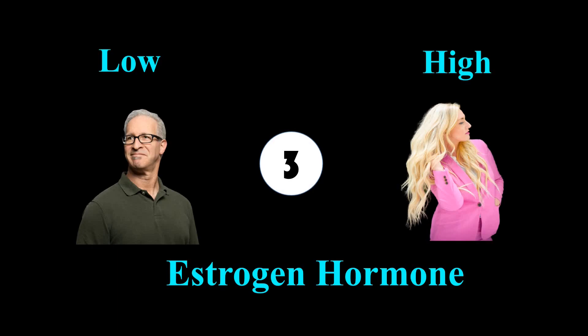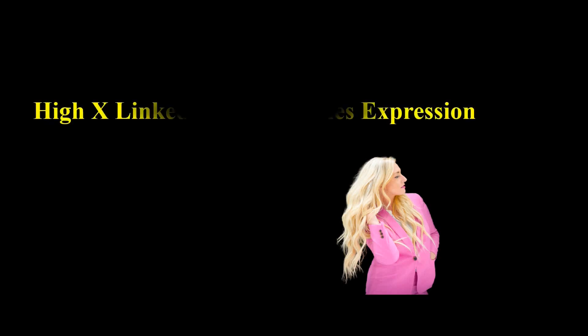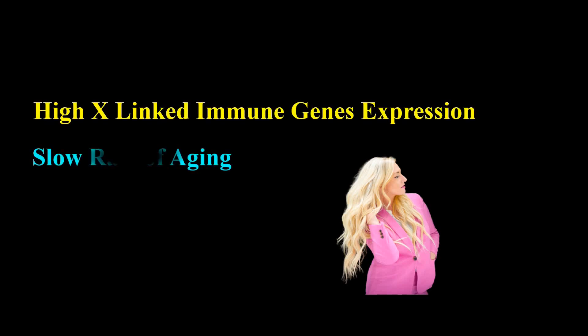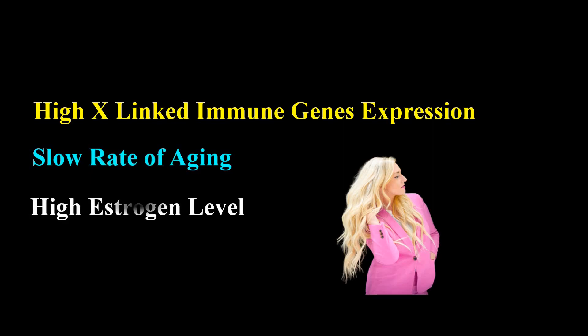Another biological factor that enables females to have a stronger immune system is the high level of estrogen hormone. Estrogen is a female hormone, very high in females compared to males, and is critical for immune-related gene expression and functioning. So all these factors — higher gene expression of immune-related genes on the X chromosome, slower aging, and high estrogen levels — are the key factors that enable women to have a stronger immune system and fight disease.